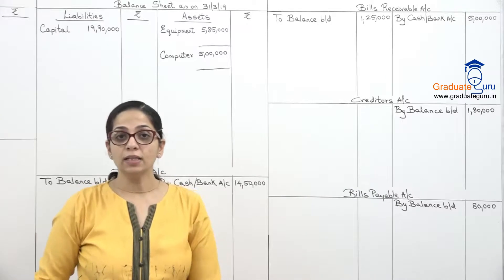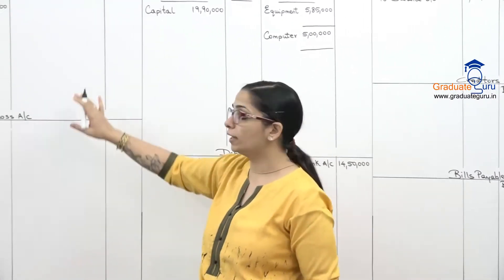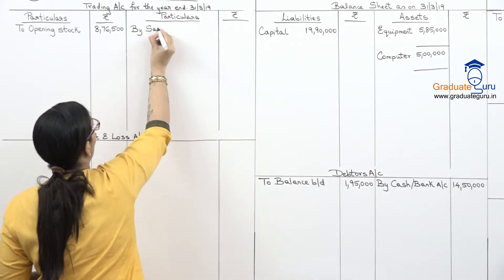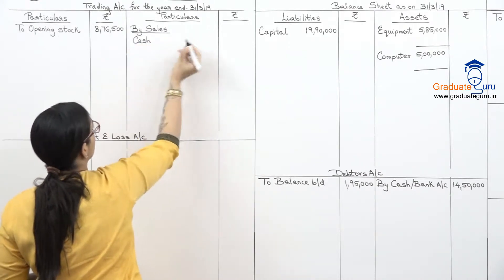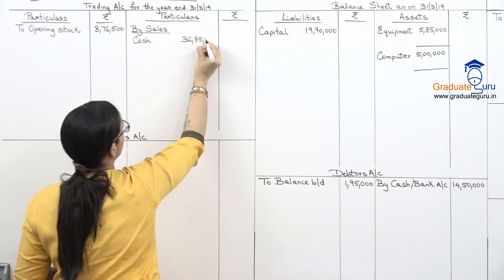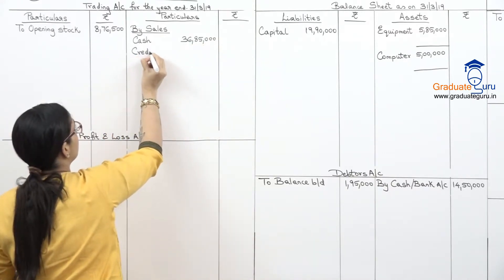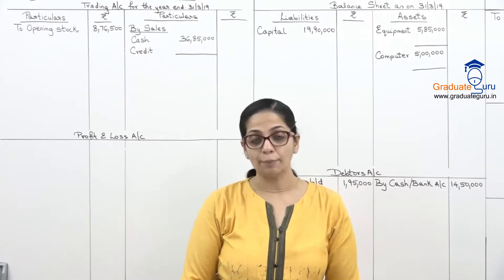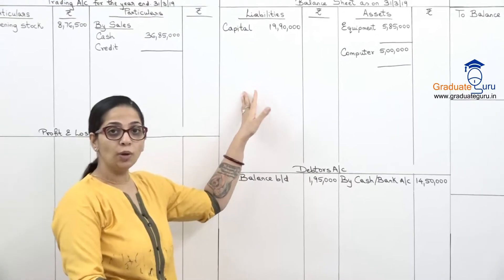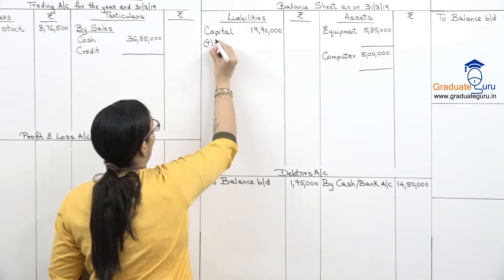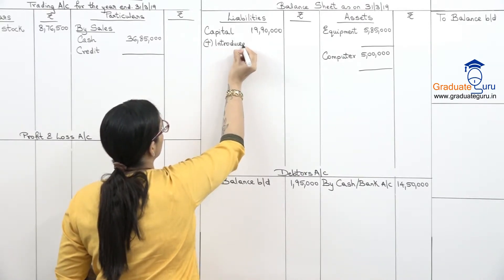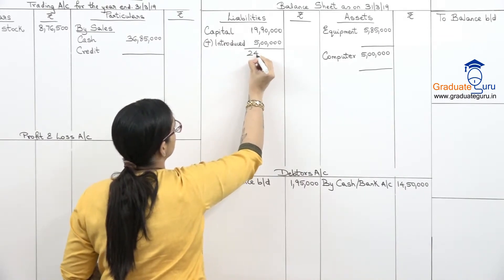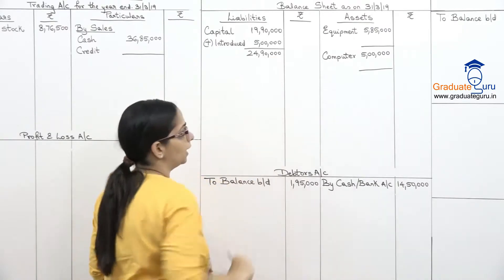Then we have to sales cash — cash sales of thirty six lakh eighty five thousand, recorded in the trading account as 'by sales cash.' We leave space for credit sales. On the receipt side, to capital introduced five lakhs — this adds to capital, so I write 'add: introduced five lakhs,' making the running capital total twenty four lakh ninety thousand.